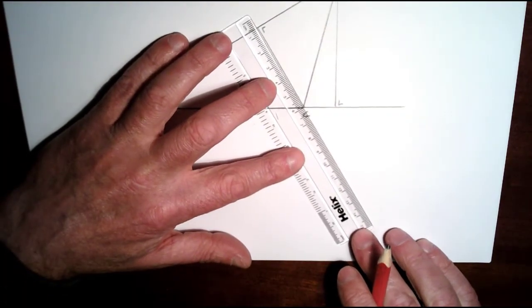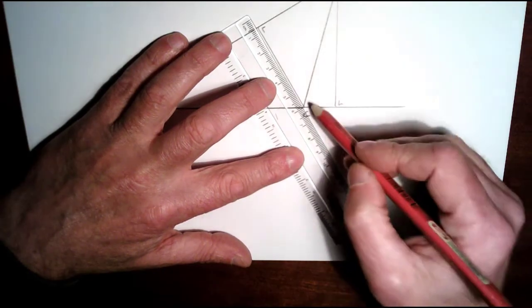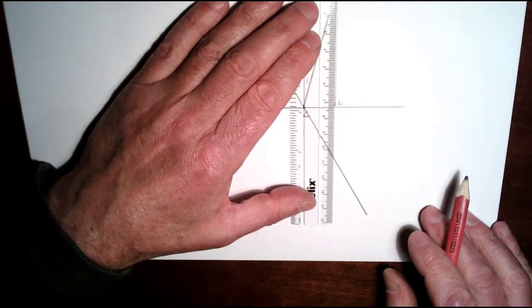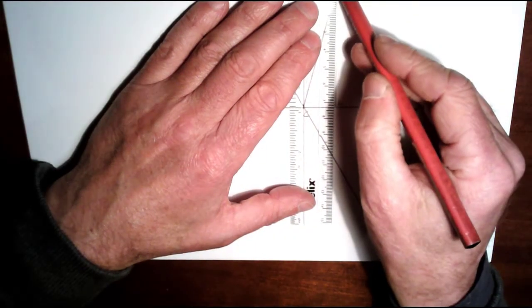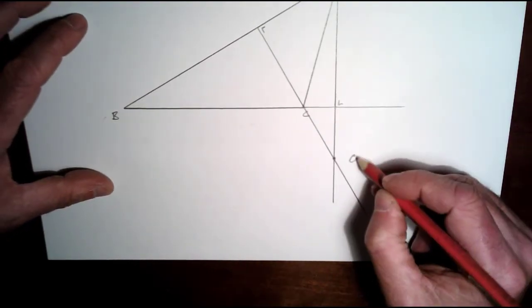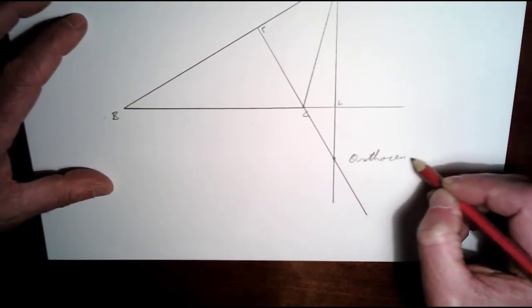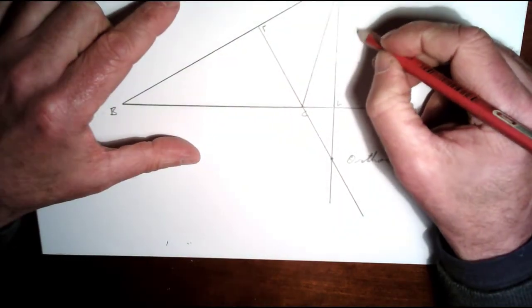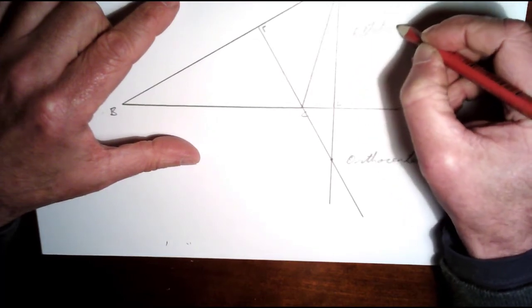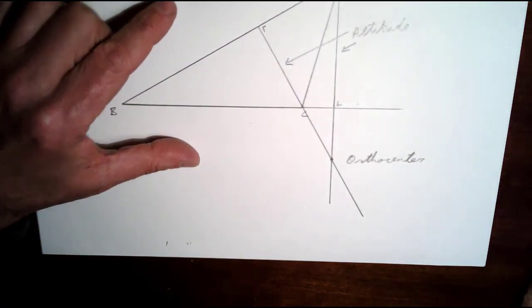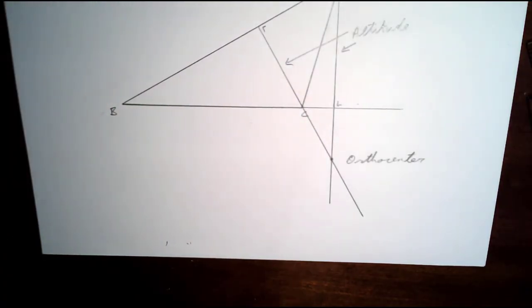So if I extend this one down to here and just extend this one a bit further down to here, you can see the orthocenter is outside the triangle—it's down here. And these are my two altitudes here and here. That's it for this construction.